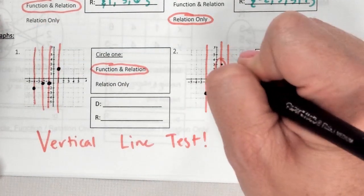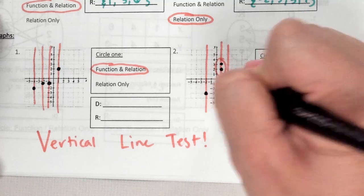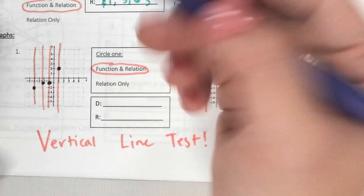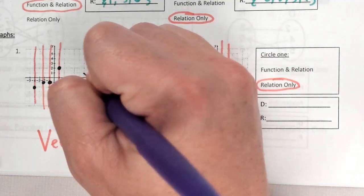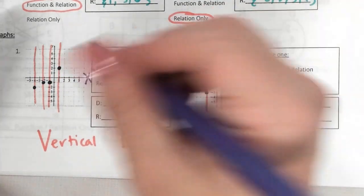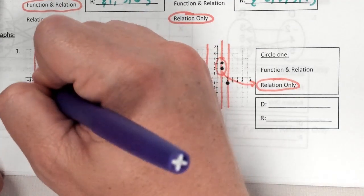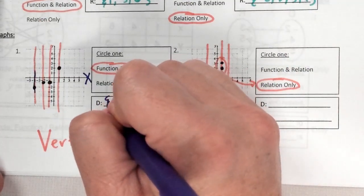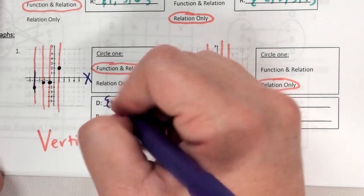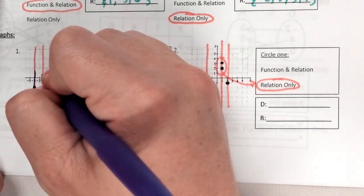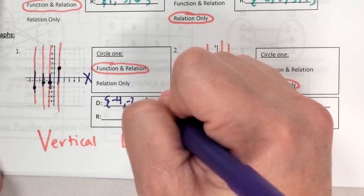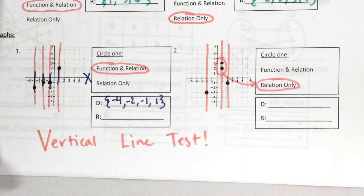Now we're going to look at domain and range. I said X values are side-to-side, so I'm looking at the X-axis only for my possible X values. Starting farthest left working right: this one is all the way negative 4, then negative 2, negative 1, and positive 1. So there's my domain.